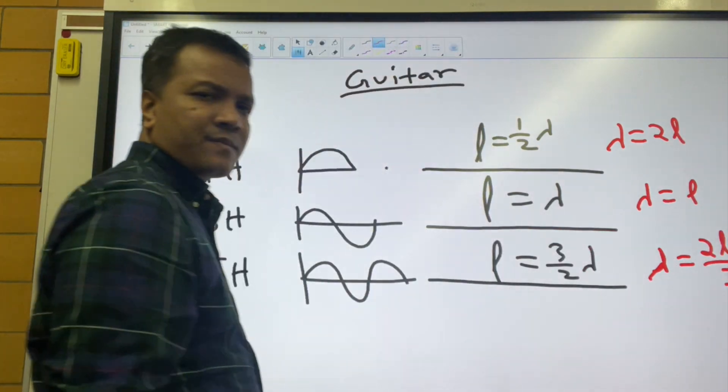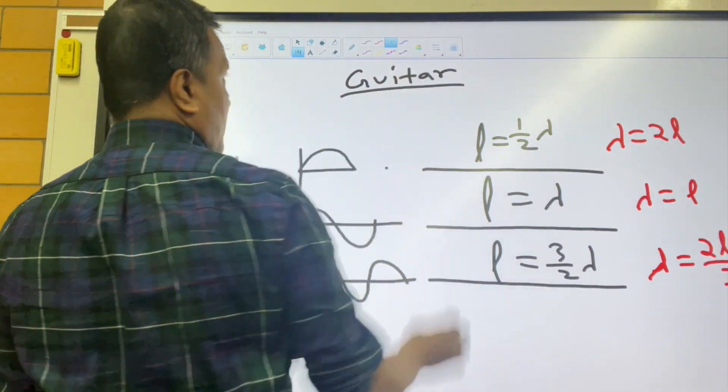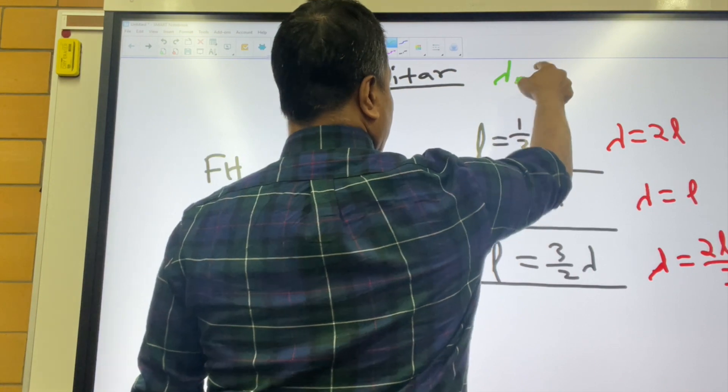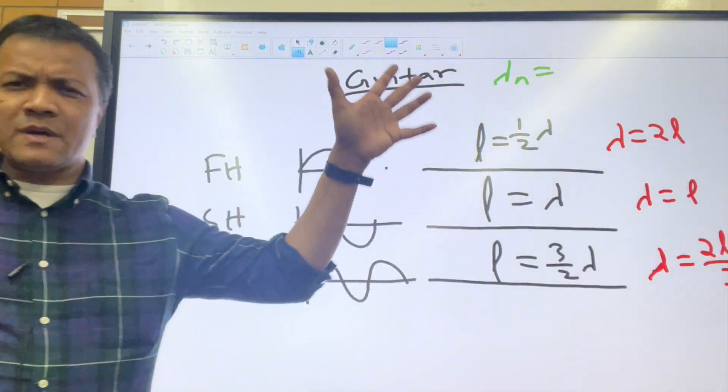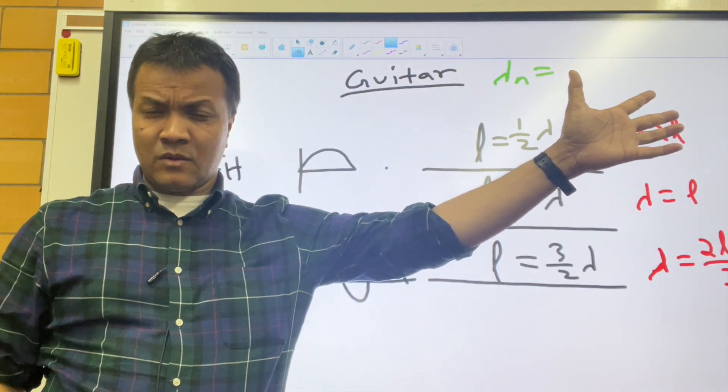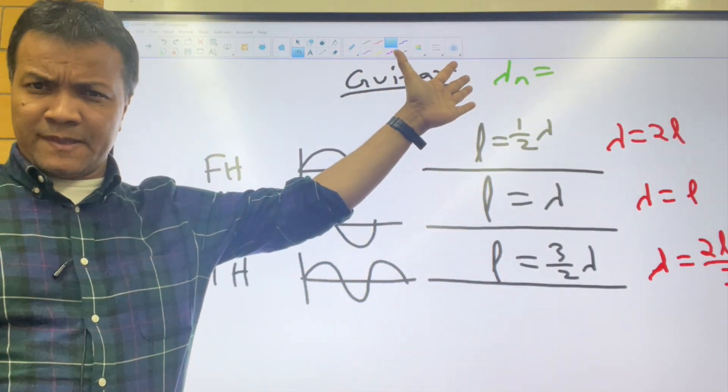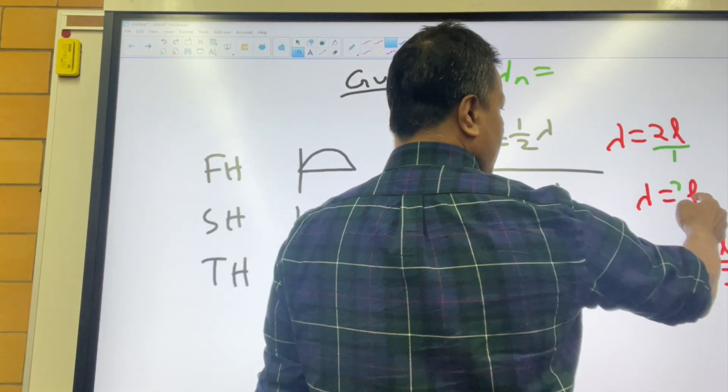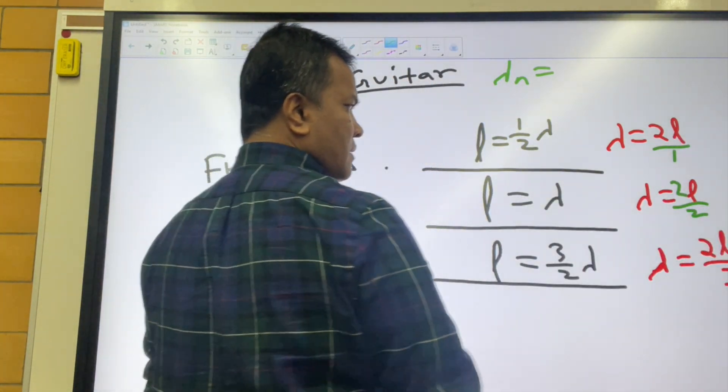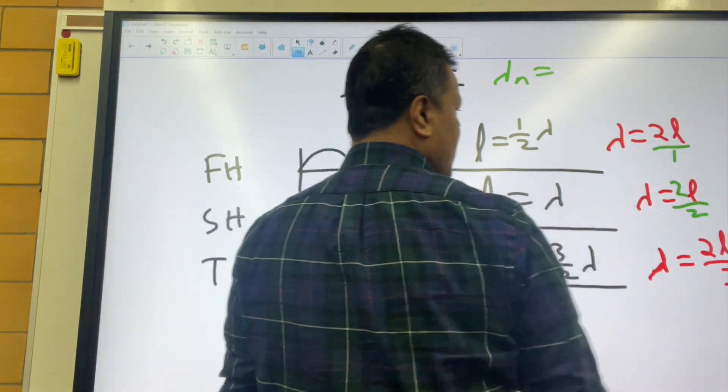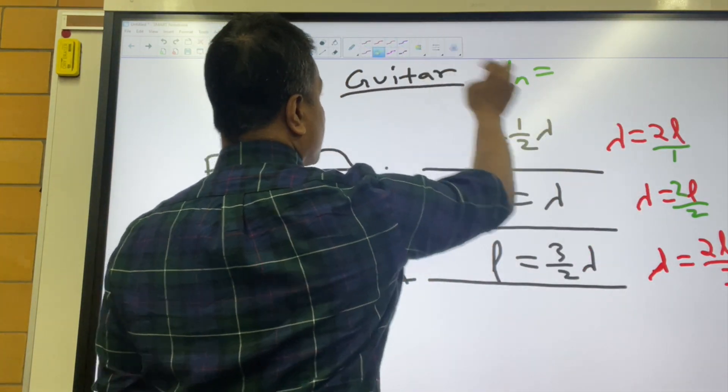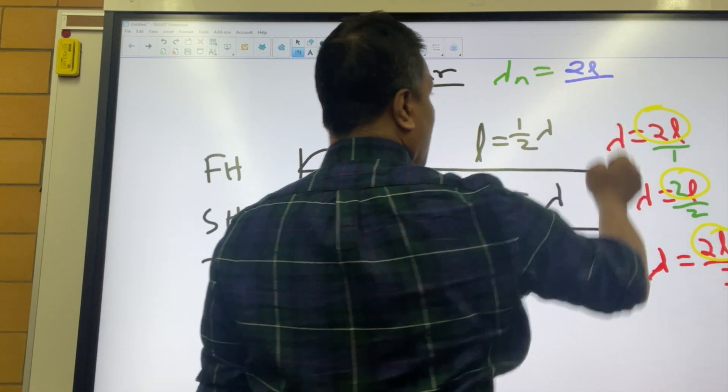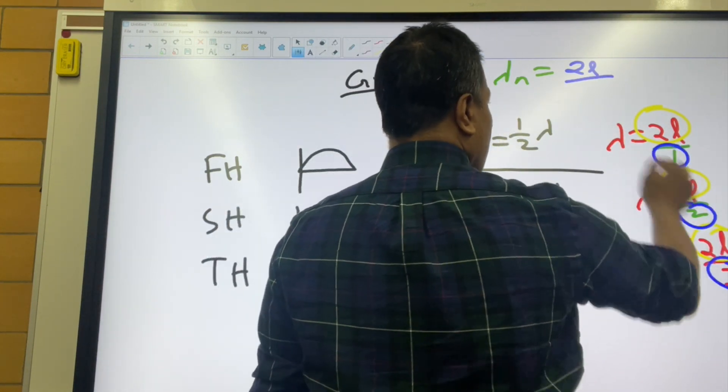So what do you notice? You notice something that allows you to discover the equation for lambda. If someone tells you, find the nth wavelength, that would be the equation for nth wavelength. You put one over here, you put two over here. On the top, you have 2L, 2L, 2L. On the bottom, you're going to be seeing one, two, three. So lambda equals 2L over n, where n is the anti-node.